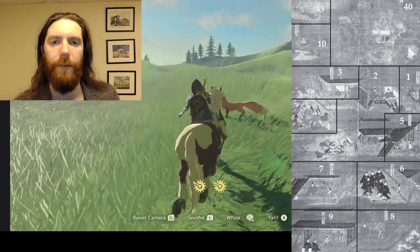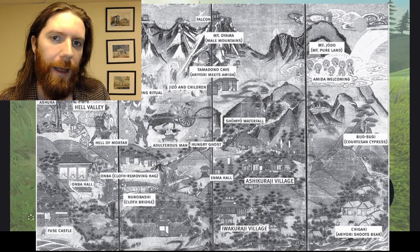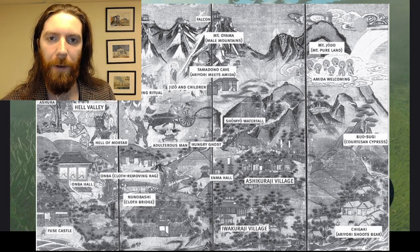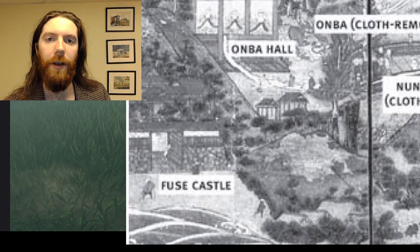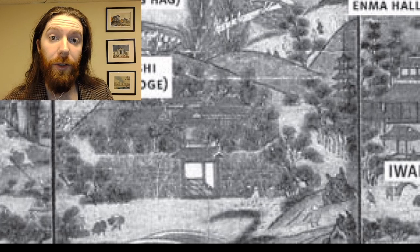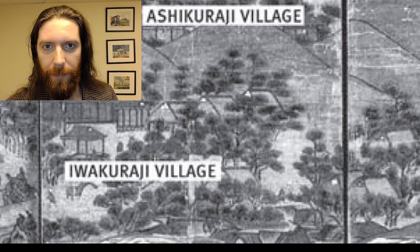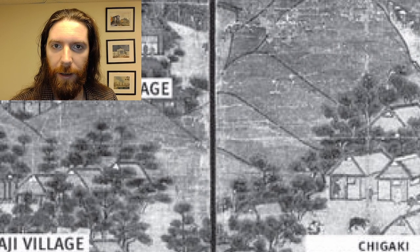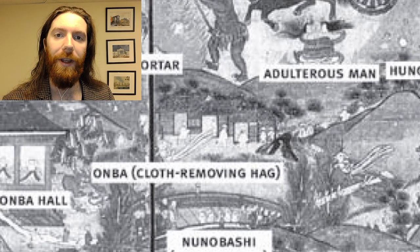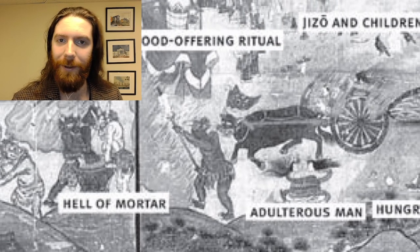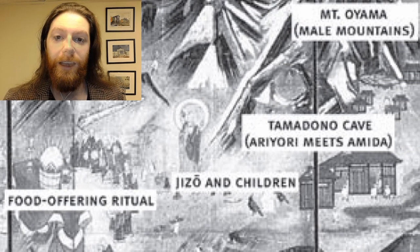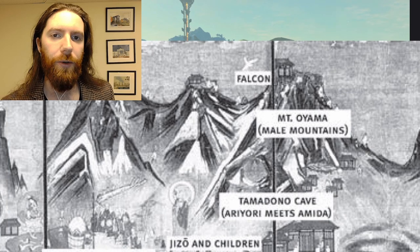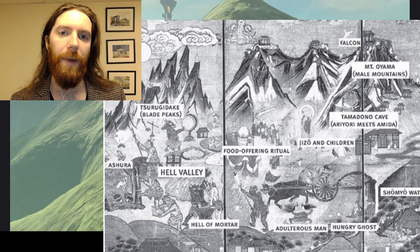Here is an example: a set of scrolls called the Tatayama Mandala that date to the 17th or 18th century. The scrolls tell the story of a man named Ariyori who is searching for his father's lost falcon. The story starts at the bottom left, where Ariyori leaves Fusei Castle. He travels to the right to Iwakuraji Village, where he almost catches the falcon but is interrupted by a bear. He shoots the bear at Shikagi and chases it and the falcon to Ashikuraji Village. He continues on to Anba Hall, where he meets a picture of Anba — an ogre who rips the clothing off people as they transfer into the underworld. He then chases the falcon and the bear to Mount Oyama, where he enters a cave and discovers that the falcon and bear were actually two Buddhist divinities who tell him he will become the founder of the Tatayama Shinko religion.